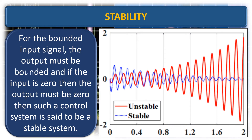For a bounded input signal, the output must be bounded, and if the input is zero, then the output must be zero. Such a control system is said to be a stable system.